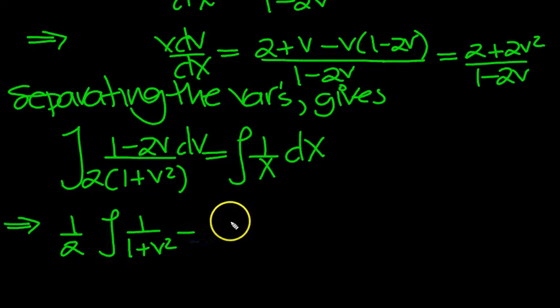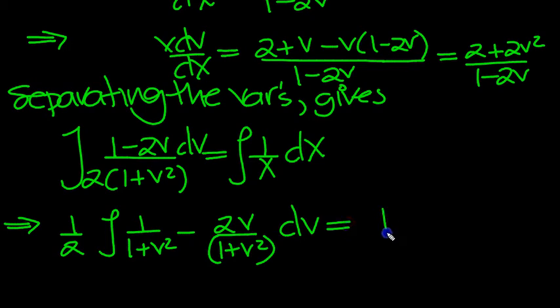Minus 2v over 1 plus v squared, there we go. And that's dv. And integrating the right-hand side, we get ln x plus k.